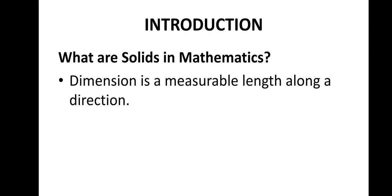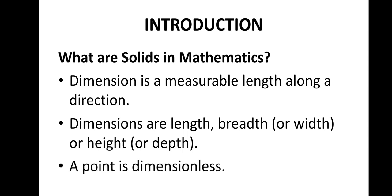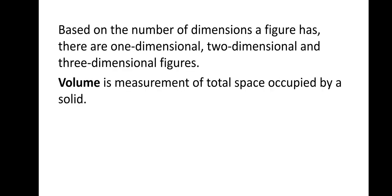What do you mean by a dimension? Dimension is a measurable length along a direction. Dimensions are length, breadth, width, height or depth. A point is dimensionless. Based on the number of dimensions a figure has, there are 1-dimensional figures, 2-dimensional figures and 3-dimensional figures.